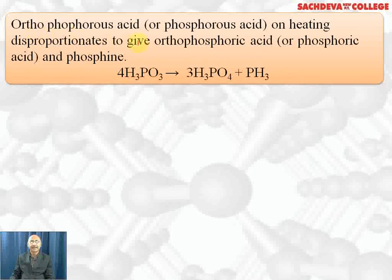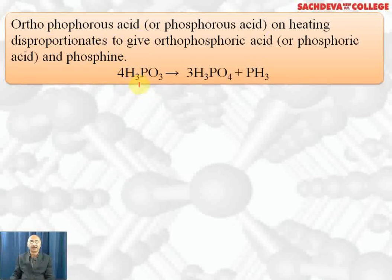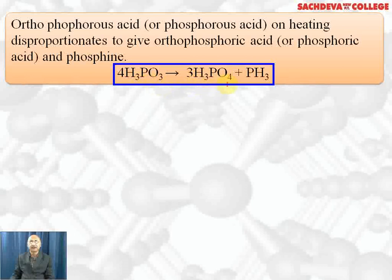Orthophosphorus acid, or phosphorous acid, on heating disproportionates to give orthophosphoric acid and phosphine gas. The balanced equation is: 4 moles of H₃PO₃ gives 3 moles of H₃PO₄ plus PH₃.